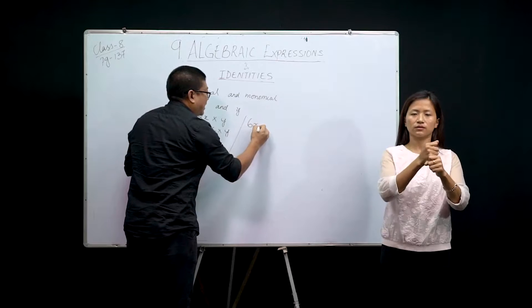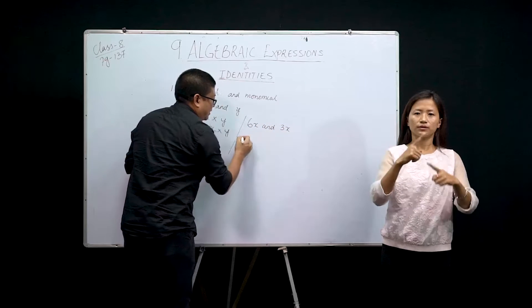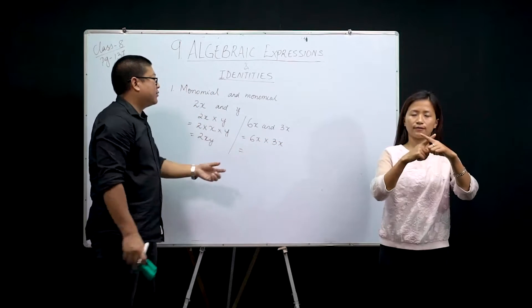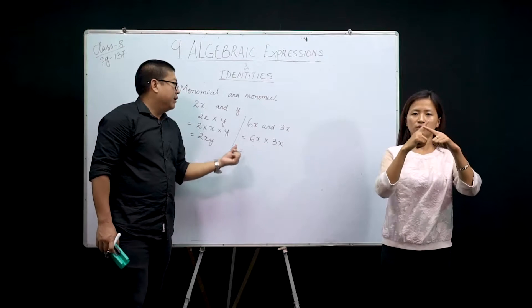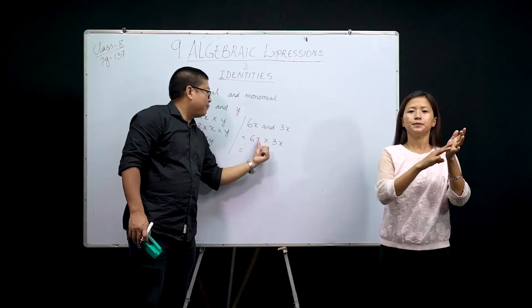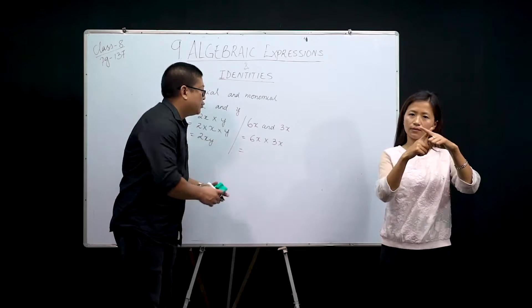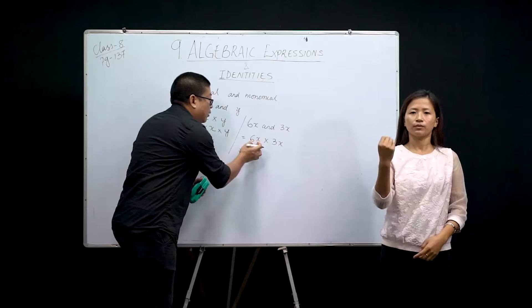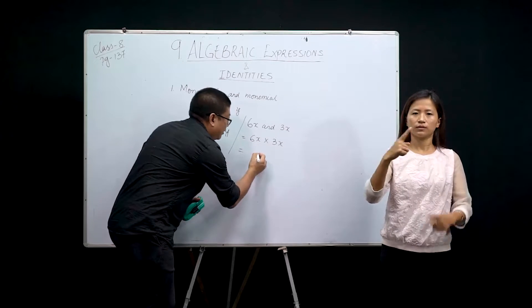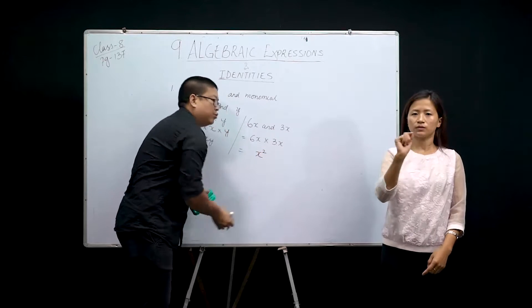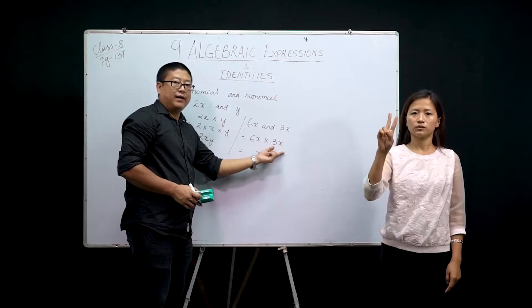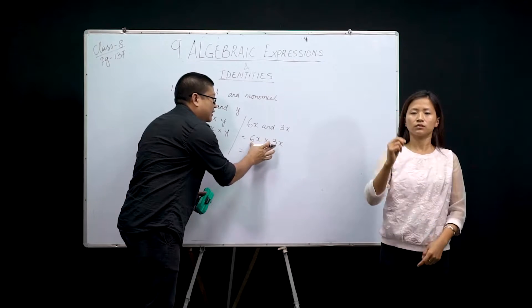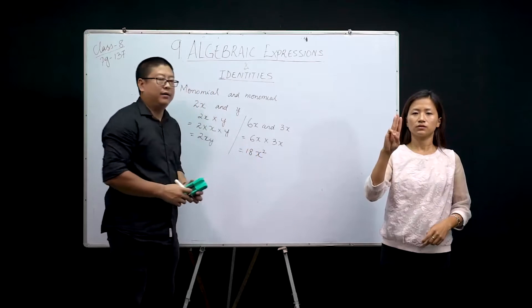Similarly, if I take the example 6x and 3x — 6x into 3x. Let's look at the variables: both are x, so we count them. We have 1x here and 1x there, giving 2 x's total, so we write x to the power 2. And for the coefficients: 6 into 3 is 18. So the answer is 18x².